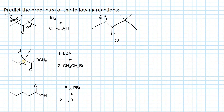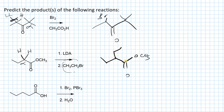The enolate ion then reacts with the alkyl halide in an SN2 reaction, alkylating the alpha position with an ethyl group. The product is the ester with an ethyl substitution at the alpha position.